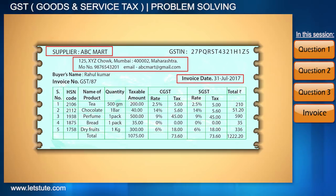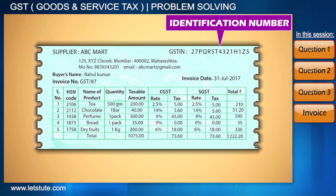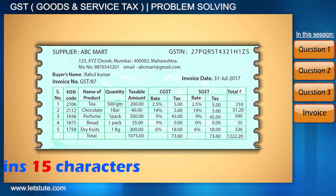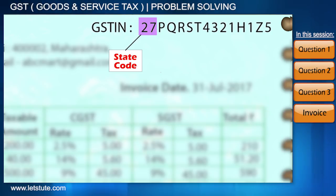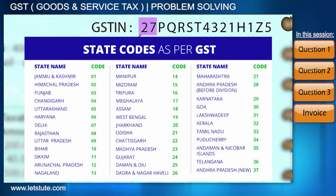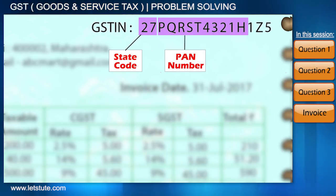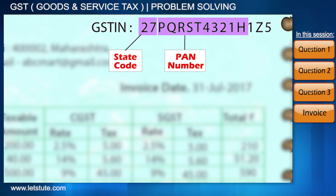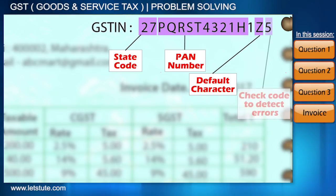The only new thing that can be seen on the invoice is a unique code called GSTIN, where IN refers to Identification Number. This code is unique for each seller and contains 15 characters. The first two numbers represent the state code — for example, 27 is the state code of Maharashtra. Here is a list of all state codes showing which state the firm is registered in. The next 10 characters are the PAN number of the producer. After that, a number represents the count of registrations under this PAN. Z is uniform for all, and the last character is a check code to detect errors.